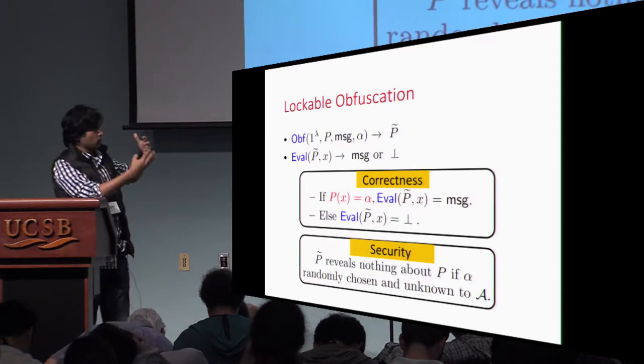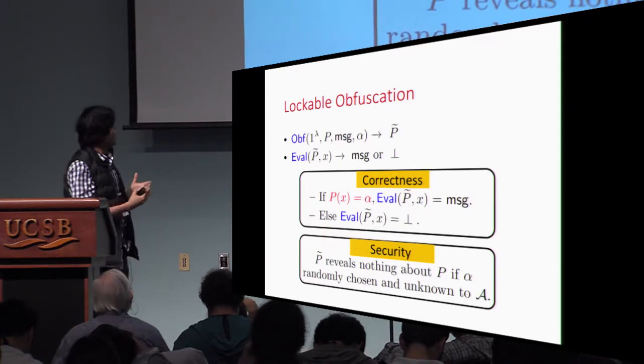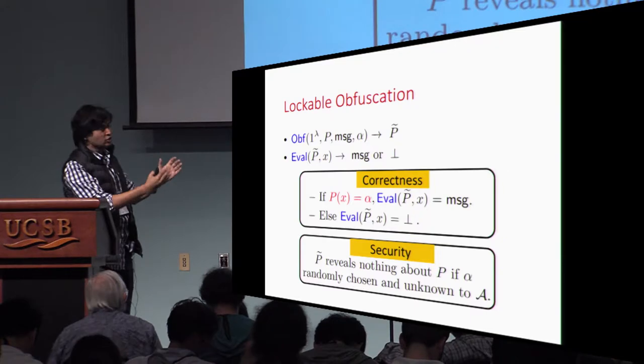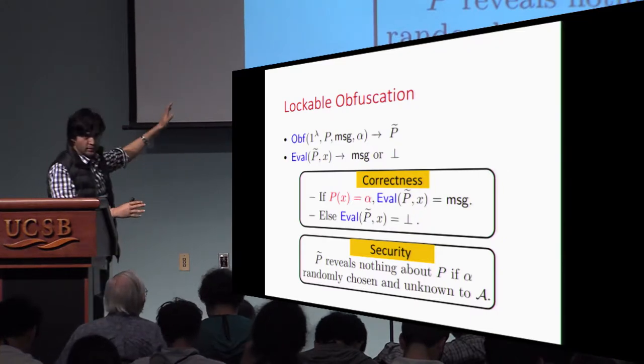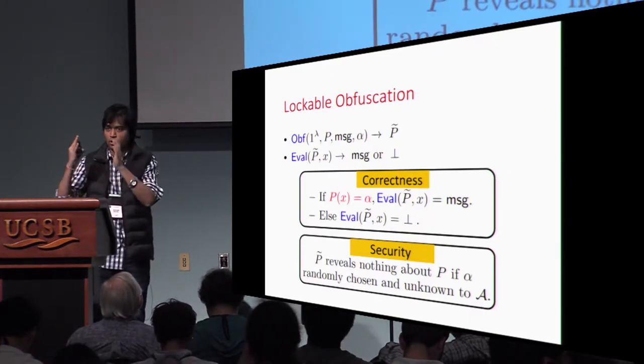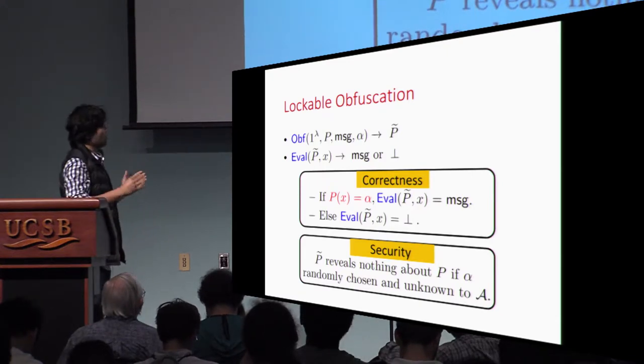The security requirement that we want from a lockable obfuscation scheme is that the obfuscated program should not reveal any information about the program that was obfuscated or the message if the lock string alpha is chosen uniformly at random.